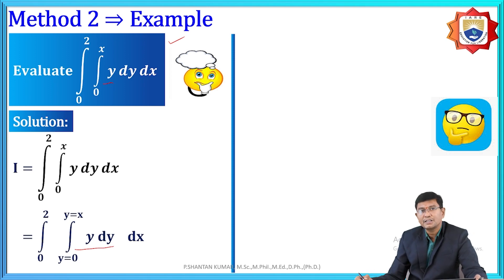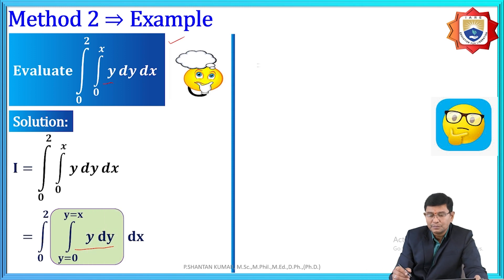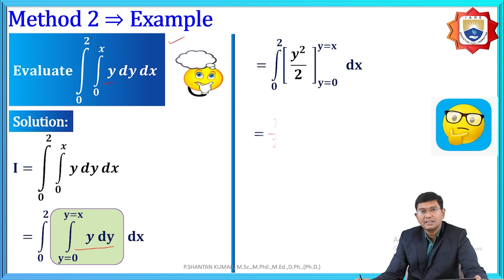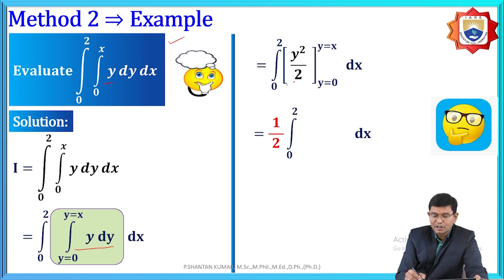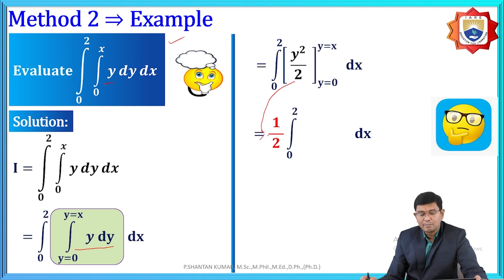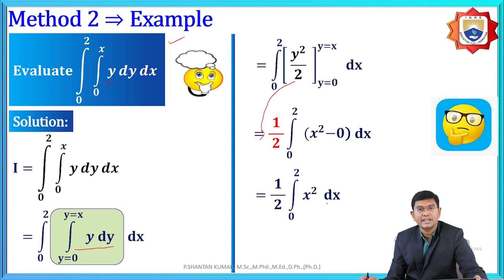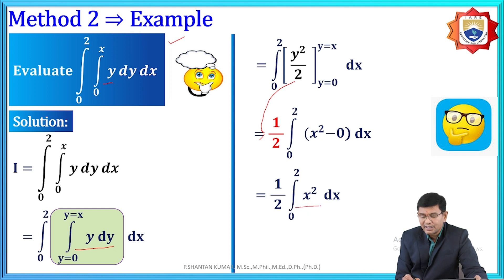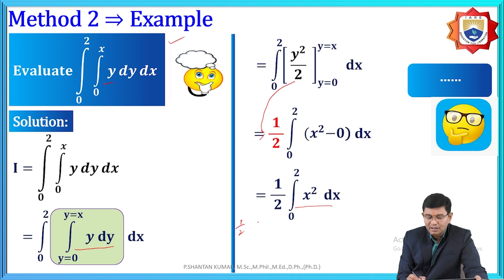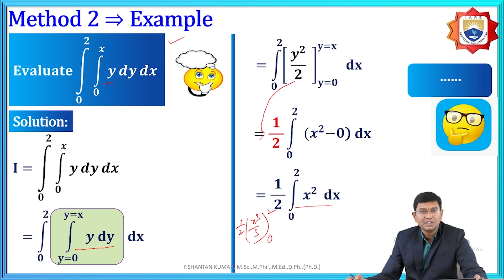Integrating y with respect to y gives y²/2. With limits 0 to x, substituting gives x²/2 - 0 = x²/2. Taking (1/2) as common and integrating x² with respect to x from 0 to 2 gives x³/3. Substituting the limits: (1/2)(8/3) = 4/3. The final solution is 4/3.